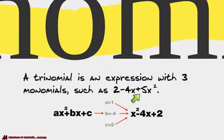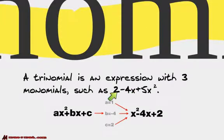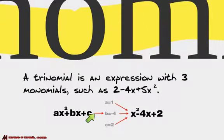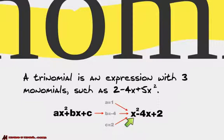Now, if we put them in order from the degree — remember, the degree is the term that has the highest exponent added up together. So the degree here is 2, the degree here is 1, the degree here is 0. We put them in order, and usually it's going to be a times x squared plus b times x plus c. Here, a represents 1, b represents negative 4, and c represents 2.